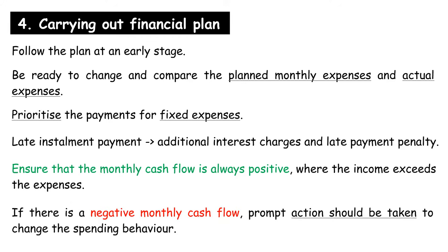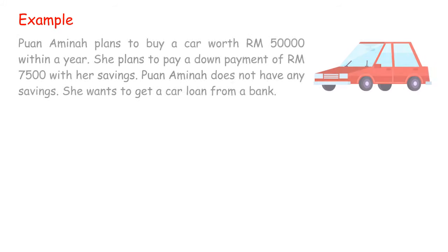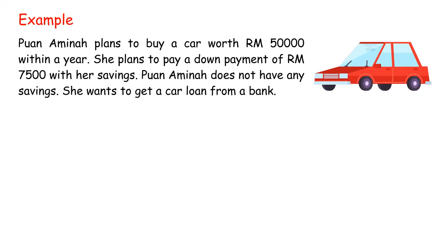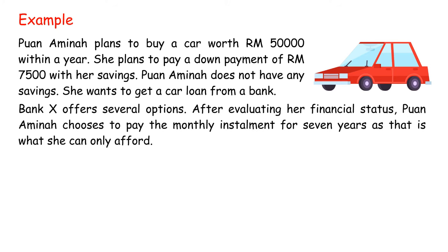If there is a negative monthly cash flow, prompt action should be taken to change the spending behavior. If this problem is not resolved, we will fail in achieving our financial goals within the specific time frame. Example: Juan Amina plans to buy a car worth RM50,000 within a year. She plans to pay a down payment of RM7,500 with her savings. She wants to get a car loan from a bank, and after evaluating her financial status, Juan Amina chooses to pay the monthly installment for seven years.